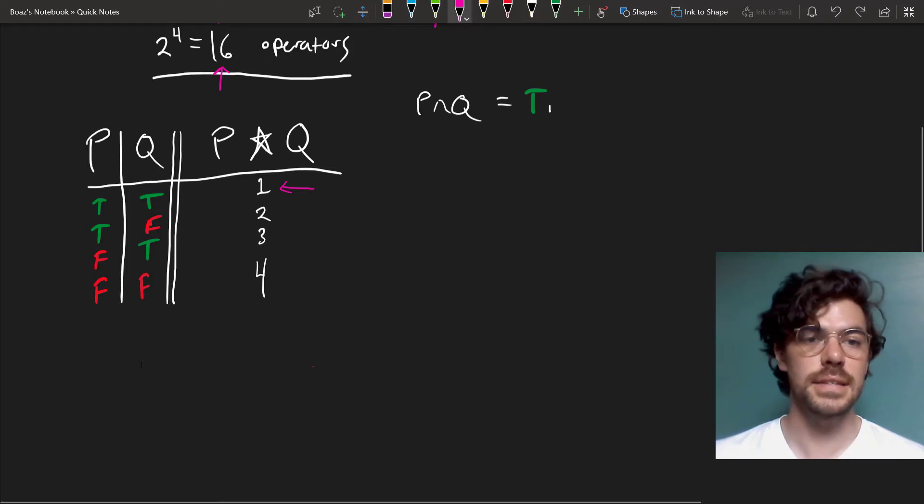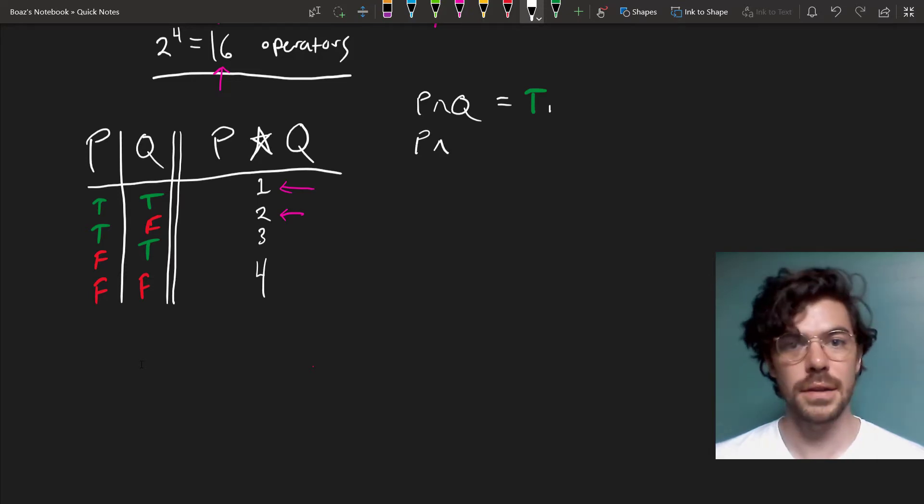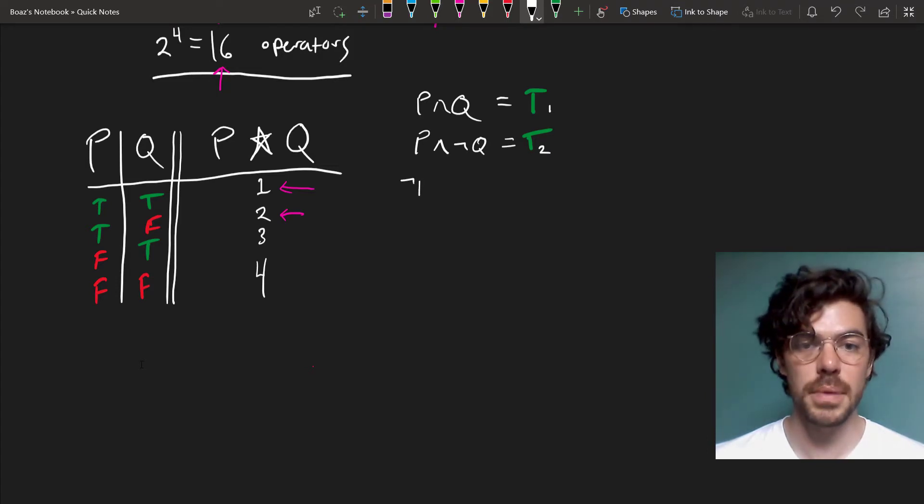Now, let's make one that gets us T on our second here and false for all the rest. And that'll just be P AND NOT Q. That's true on the second value and false in all the rest.